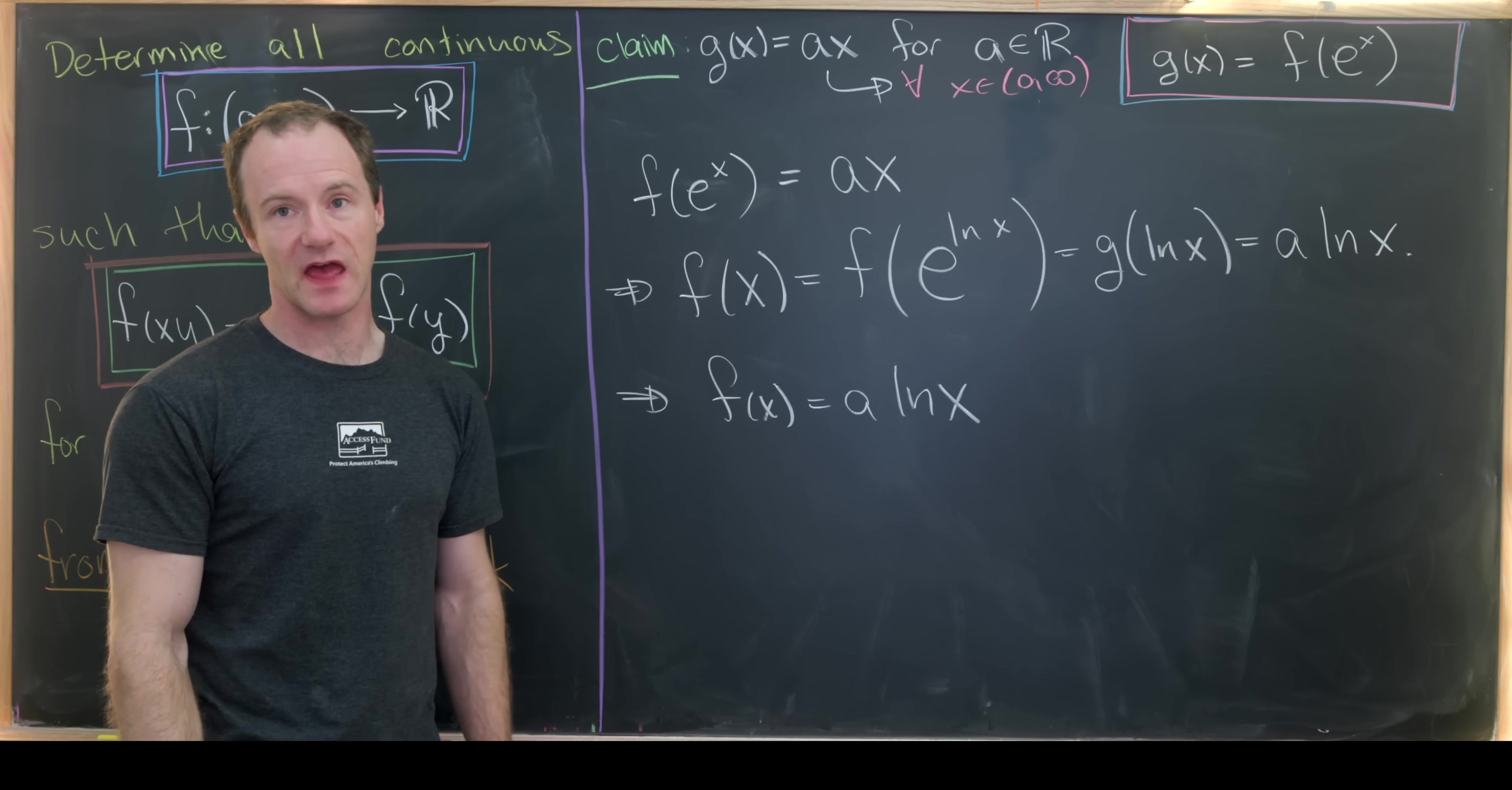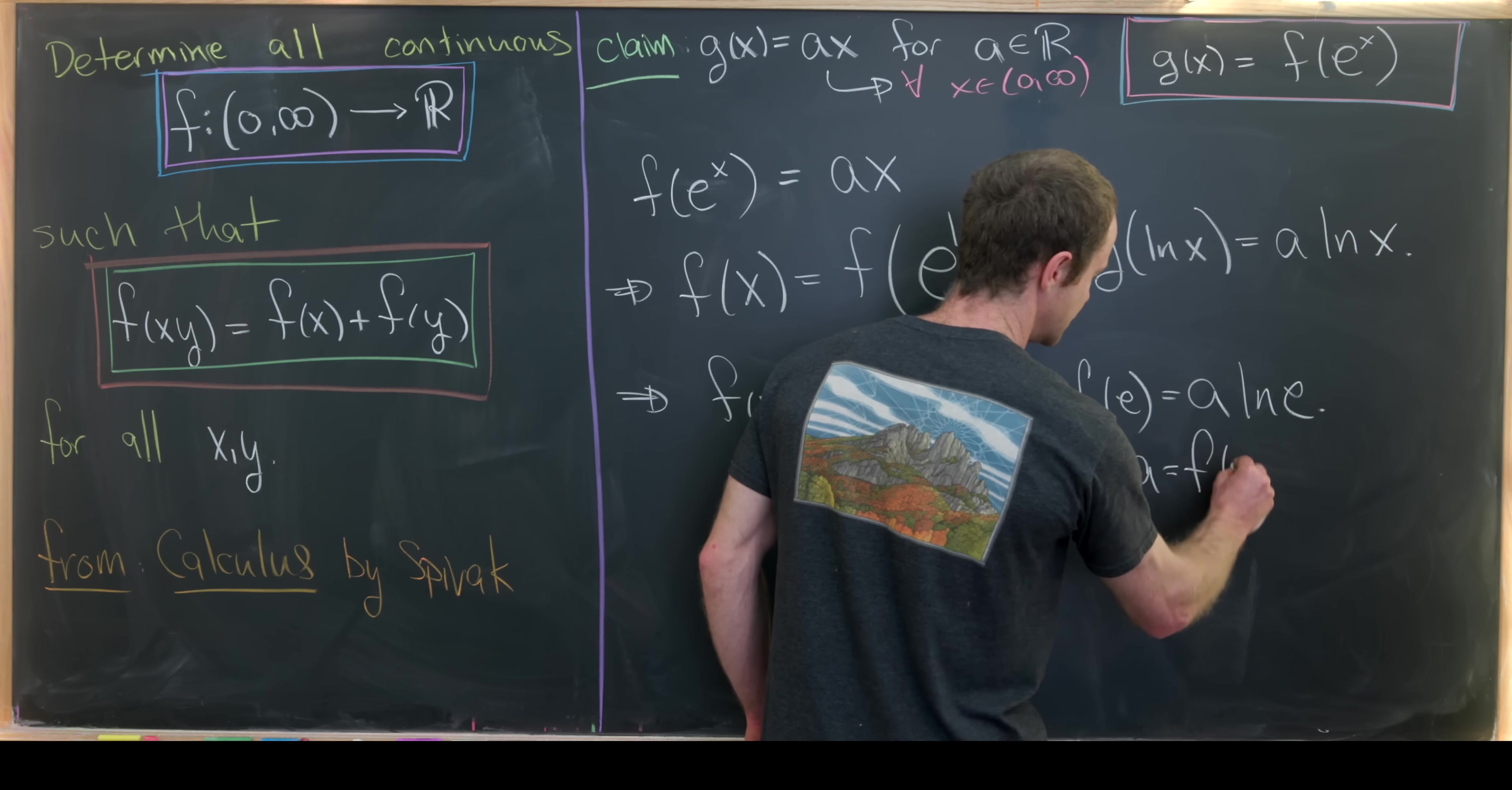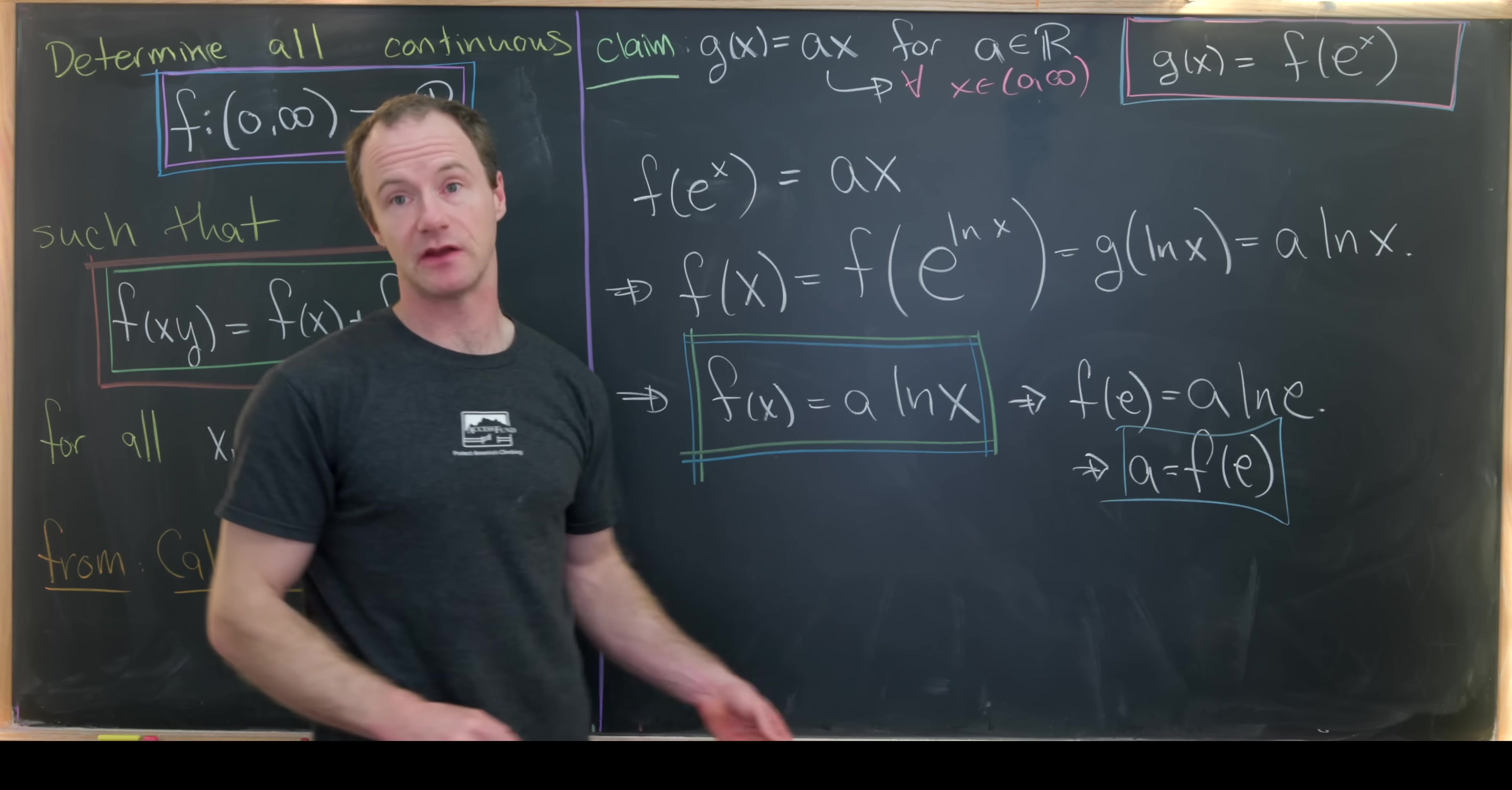And now how can we get the value of a? Well, let's evaluate this at x equals e because ln(e) is one. So that's going to give us f evaluated at e is equal to a times the ln(e). But then the ln(e) is just one. So that means that we get a is equal to f(e). But that being said, a is still a free parameter. So if we want to think about this in its most general form possible, it would be something like this. So f(x) is equal to a times ln(x), where, like I said, a could be any real number.